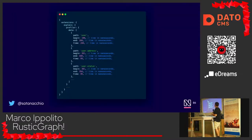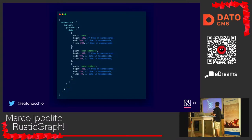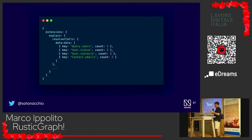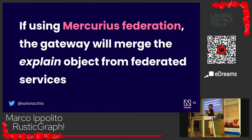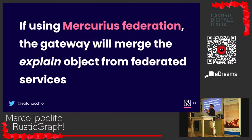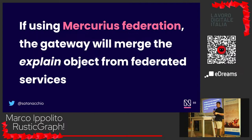This is how Mercurius Explain looks. For every query, you have the path, begin time, and time in nanoseconds. You can see how many times a resolver has been called. In a federation, it merges the explain field from every single federated service's result, so you can use it across a federation and it helps a lot to troubleshoot where performance issues are.